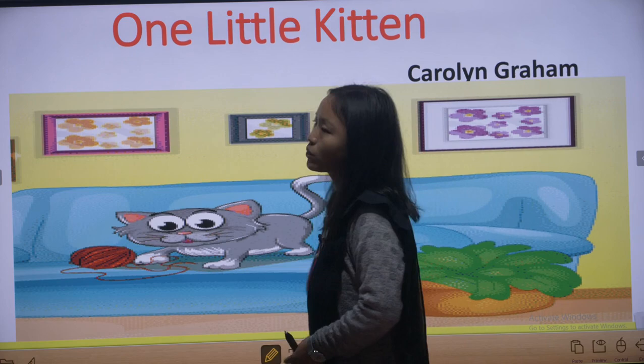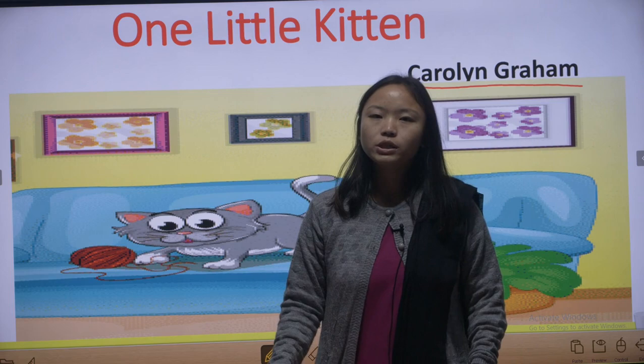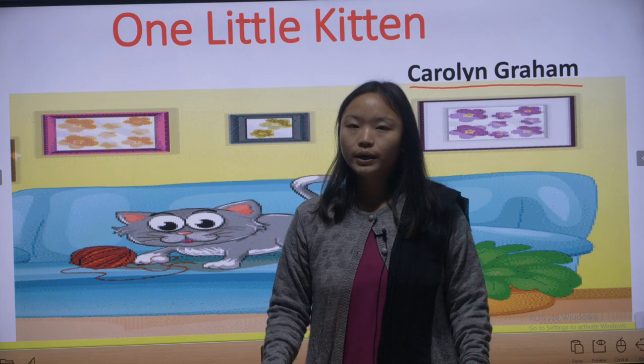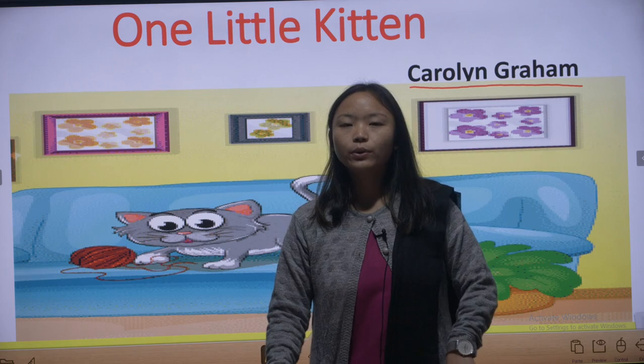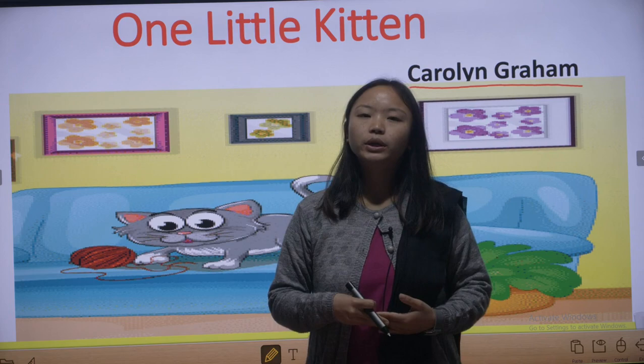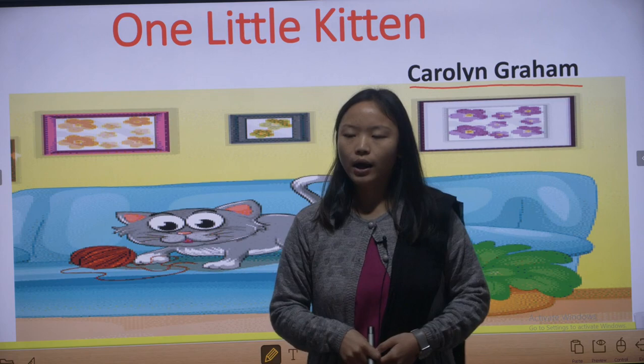The poet of this poem 'One Little Kitten' is Caroline Graham. You have to remember the name of the poet. It is very important to remember the name of the poet or the author. If it's a story, remember the name of the author; if it's a poem, remember the name of the poet. Today's poet is Caroline Graham.